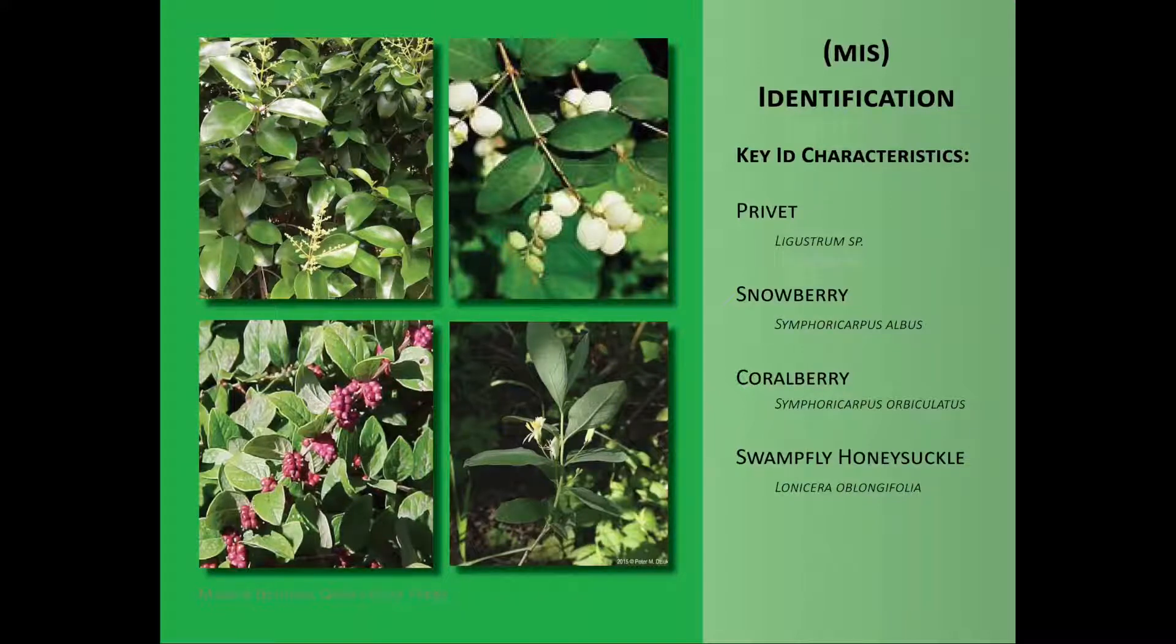Coralberry has similar opposite growth and entire leaves, but has a solid pith and coral to purple berries. Snowberry has a hollow pith like our target, but can be distinguished by its white fruits. Privets are also invasive species with opposite growth and entire leaves, but the flowers grow in clusters at the tips of the branches and have greenish black berries.